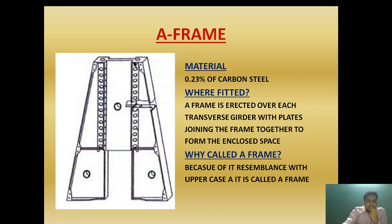Above the transverse girder, an entablature is provided. The material of the A-frame is 0.3% carbon steel, the same as used in the transverse girder — so the transverse girder and A-frame are of the same material. The A-frame is erected over each transverse girder, with plates joining the frames together to form an enclosed space for each individual cylinder unit.